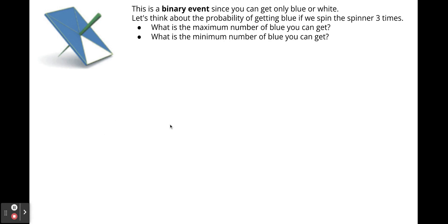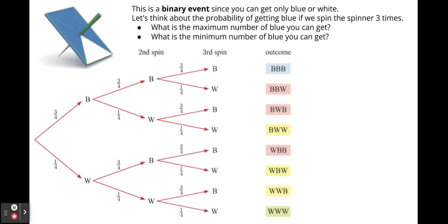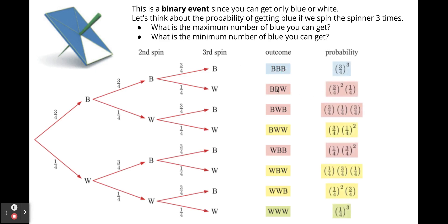We can show this using a tree diagram. If you spin the spinner once, you get either blue or white. Spin it a second time, again blue or white, and continue until three spins. We can see all possible outcomes: three blues, exactly two blues (in red), exactly one blue (in yellow), and no blues (in green). We calculate these probabilities by multiplying along branches — for example, blue, blue, white gives three-fourths times three-fourths times one-fourth.